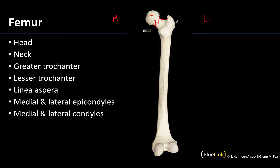Opposite to the head, so very laterally facing, will be the greater trochanter, and as its name would suggest it is going to be larger than the lesser trochanter. The greater trochanter is going to be a muscle attachment site — the gluteus medius and minimus as well as some of the more deeply placed lateral rotators of the hip, not the gluteus maximus but some of the deeper lateral rotators. The lesser trochanter is smaller and posteriorly oriented, and this is going to be the distal attachment site for the iliopsoas.